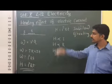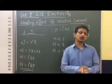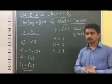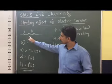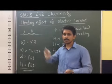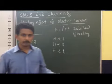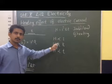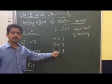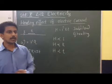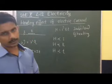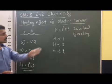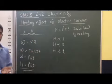Based on this, we can state Joule's Law of Heating: the amount of heat energy produced on a conductor is directly proportional to the square of the current, the resistance of the conductor, and the time for which the current is passing through that conductor.